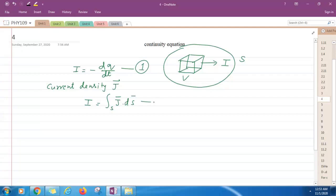This is equation number 2. Now equation one can be written like this. Volume integration rho dv because this charge is related with the volume charge density.